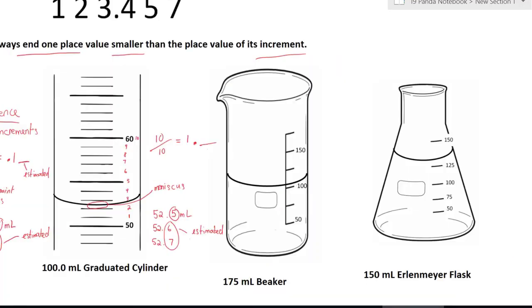So now we're looking at a 175 milliliter beaker. Same thing, you use the same formula, the difference divided by the number of increments. I will take 100 minus 50, that's my difference. Now I'm going to count the number of increments, 1, 2. 100 minus 50 will give me 50. 50 divided by 2 will give me 25.